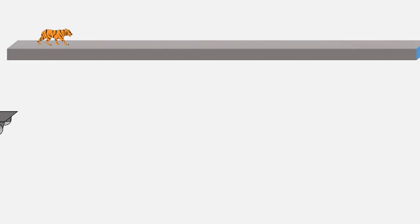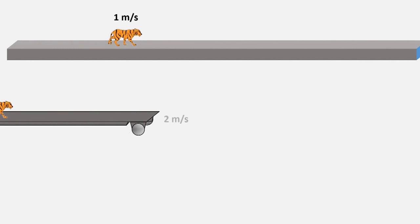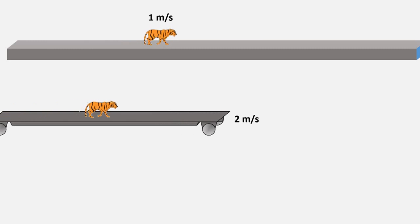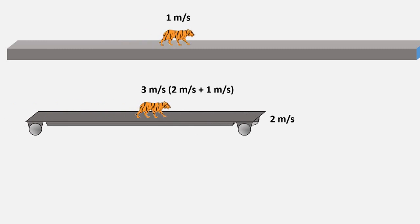Now this tiger is walking on this catwalk with a velocity of one meter per second. If it walks at the same velocity on a platform which is moving at two meters per second, then its velocity relative to the ground is the sum of the velocities, three meters per second.